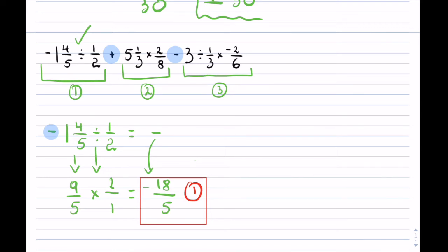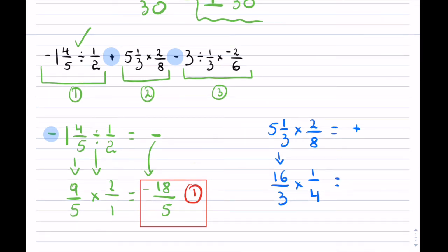For term number 2, I have 5 and 1 over 3 times 2 over 8. The answer is obviously positive because both are positive. I'll change the mixed number to improper: 3 times 5 plus 1 gives 16. And I noticed that 2 over 8 is really 1 over 4. Now I can reduce — 4 goes into 16 four times, and it goes into 4 once. So this is actually 4 times 1 over 3 times 1. This is my second term: 4 over 3.